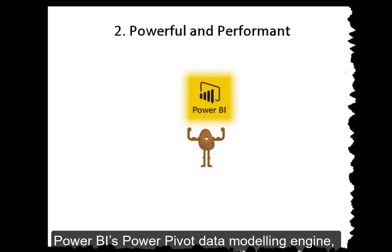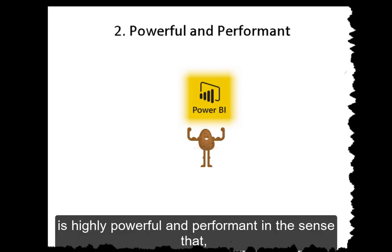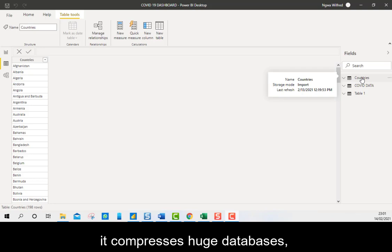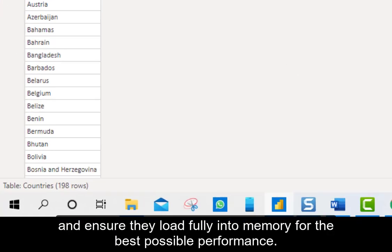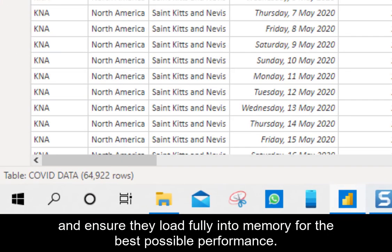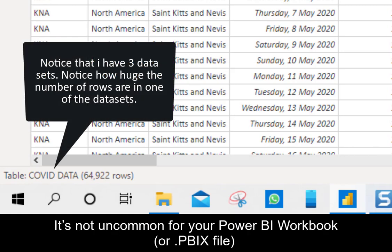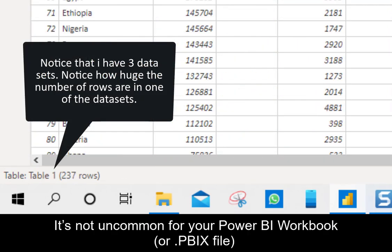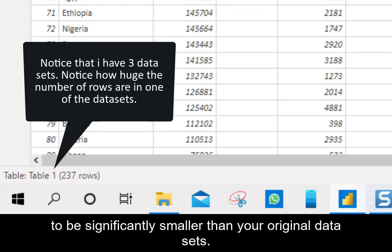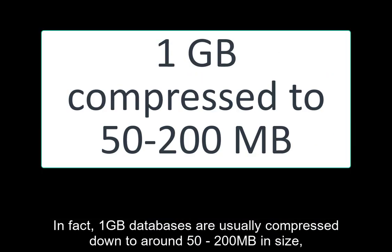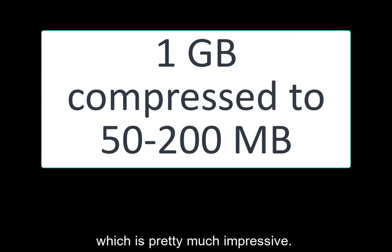Power BI's Power Pivot data modeling engine is highly powerful and performant in the sense that it comprises huge databases and ensures they load fully into memory for the best possible performance. It is not uncommon for your Power BI workbook or PBX file to be significantly smaller than your original data sets. In fact, 1 GB databases are usually compressed down to around 50 to 200 MB in size, which is pretty impressive.